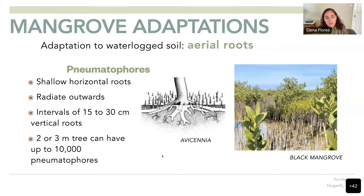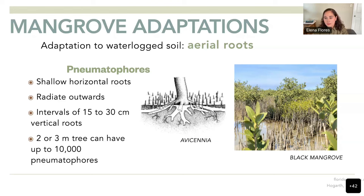A medium-sized black mangrove can have up to 10,000 pneumatophores. Here is a picture of the pneumatophores in black mangroves. Most of the time we can determine how high the tide can be by seeing how high the pneumatophores have grown in order to breathe.